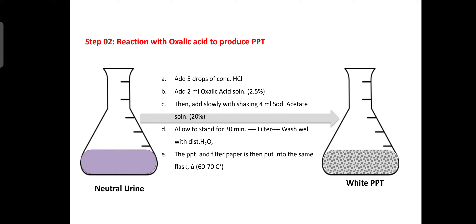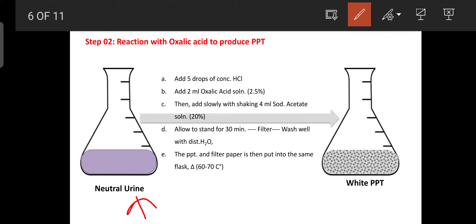Step 2 — Reaction with oxalic acid to produce a white precipitate: Add five drops of concentrated HCl to the beaker containing neutral urine. Then add 2 ml of oxalic acid (2.5%). Slowly, with shaking, add 4 ml of sodium acetate solution (20%) and allow to stand for 30 minutes so that the precipitate forms. Filter this solution and wash well with distilled water.